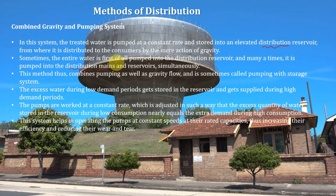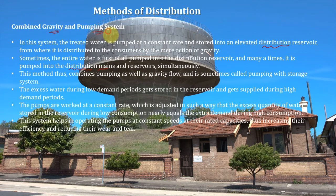Distribution mains are the pipes which carry water to people. In this method, you pump water into the distribution reservoir as well as into the mains. After water is pumped into the distribution reservoir, it then goes to the public by gravity. So in this system you are using both pumping and gravity — this is one of the most widely used methods. If a city is located at foothills, the best system would be the gravity system.